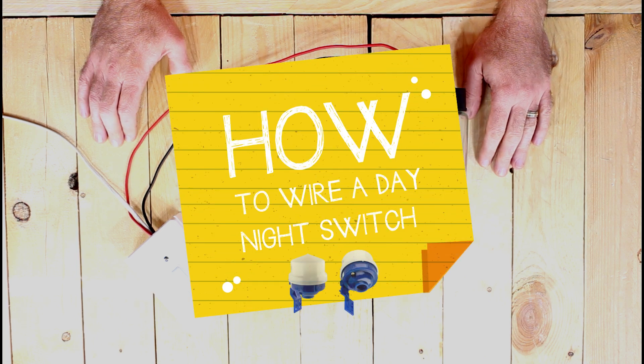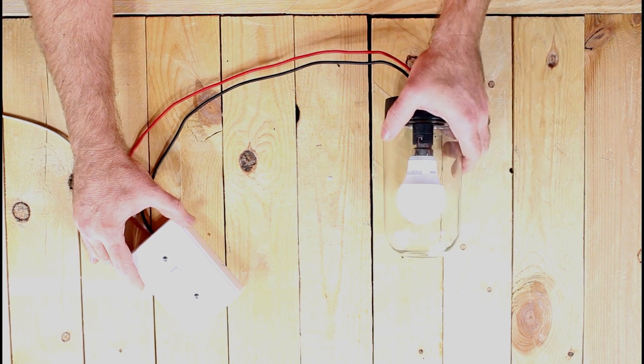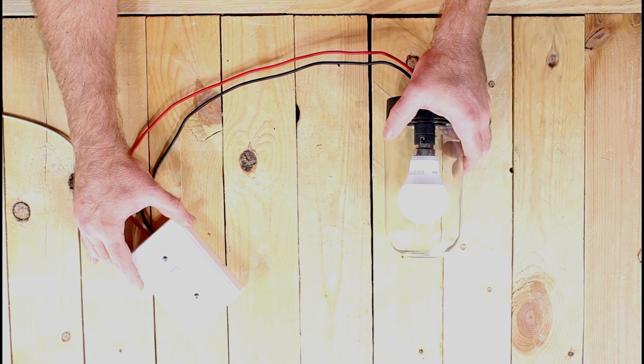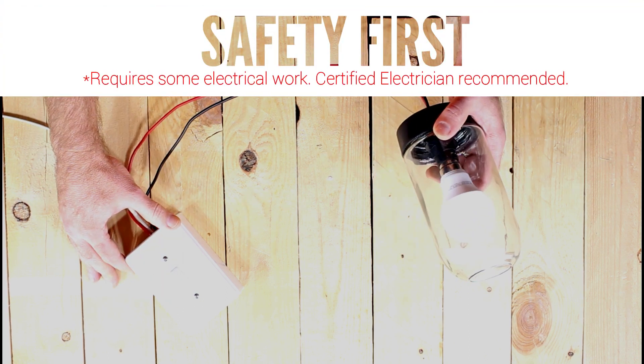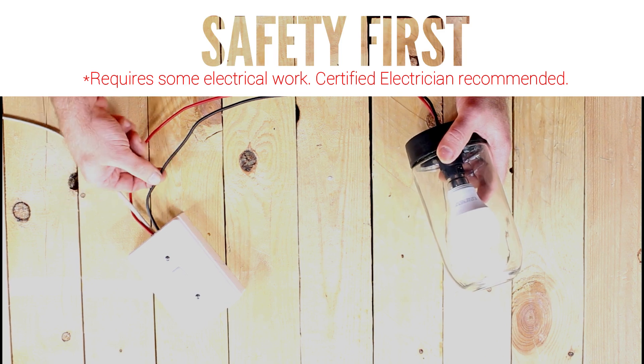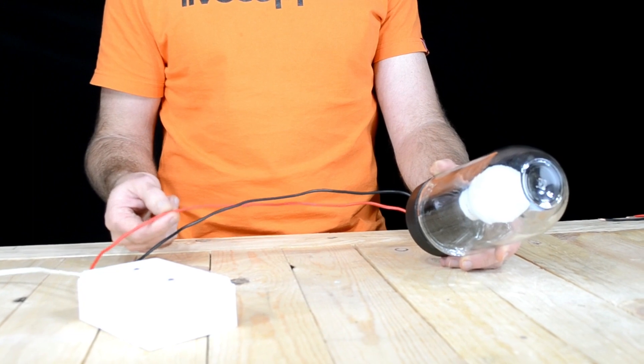This is our second video in the sequence of how to wire a day and night switch. Very simply, this would be a typical setup at your home or your office. You've got a switch and you've got a light source. You will have a neutral wire going to your light source and you will have your live wire going to your light source.